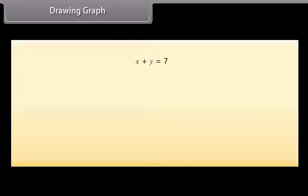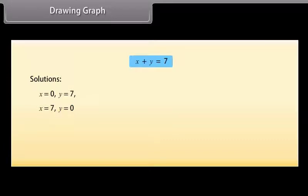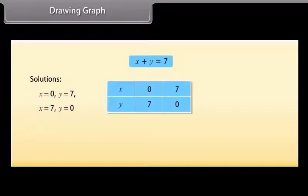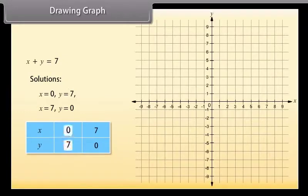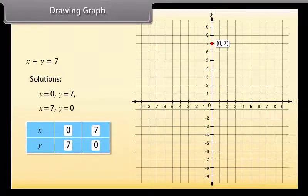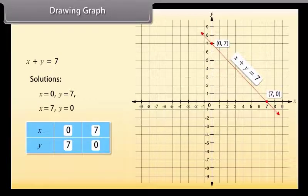Let us now draw the graph of the equation X plus Y is equal to 7. We know that to draw the graph, we need at least two solutions of the equation. The two solutions are: X is equal to 0, Y is equal to 7; and X is equal to 7, Y is equal to 0. We can use this table to draw the graph. These are the values of X and these are the values of Y. The point for X is equal to 0 and Y is equal to 7 is this. And the point for X is equal to 7 and Y is equal to 0 is this. Now join these two points — this is the required graph for the given equation.